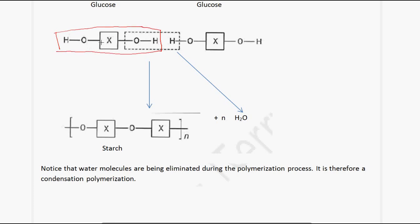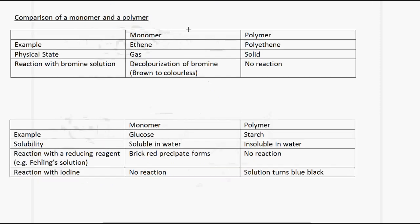A glucose molecule has two OH groups present, and what happens is that one OH and one H will combine to produce water during the formation of starch.